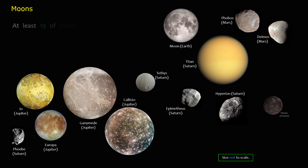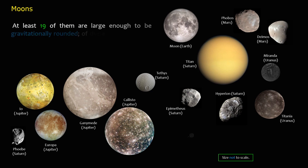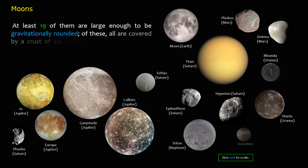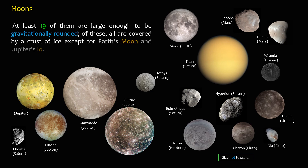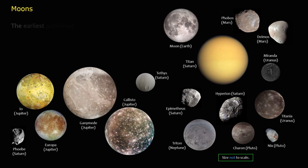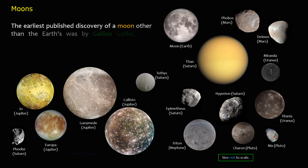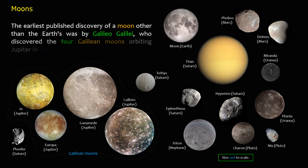At least 19 moons are large enough to be gravitationally rounded. Of these, all are covered by a crust of ice, except for Earth's Moon and Jupiter's Io. The earliest published discovery of a moon other than Earth's was by Galileo Galilei, who discovered the four Galilean moons orbiting Jupiter in 1610.